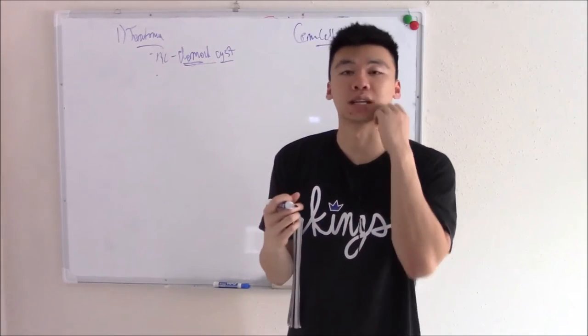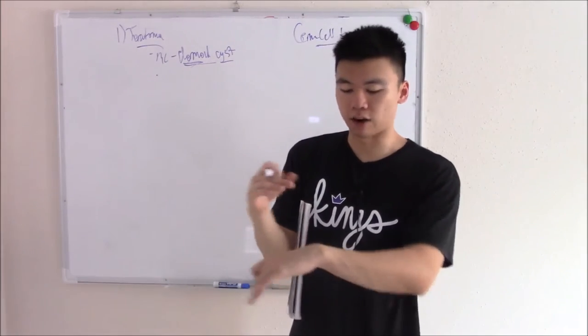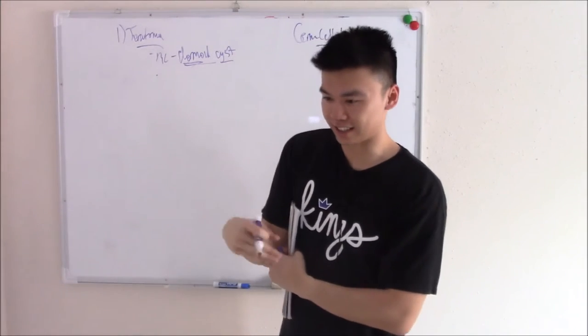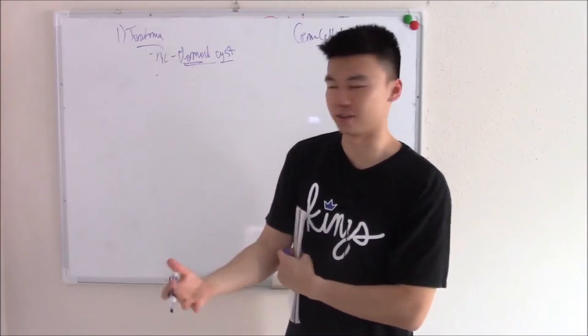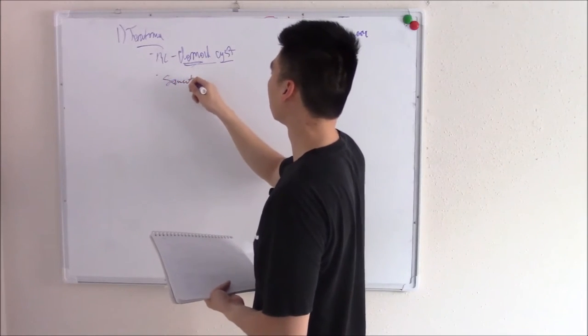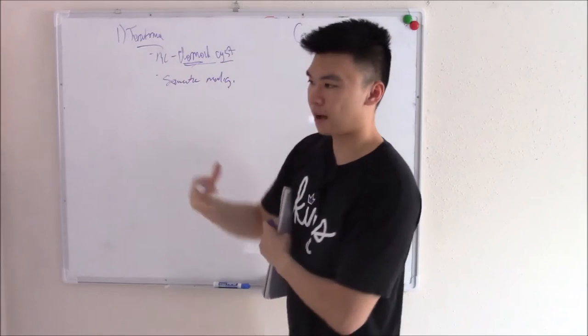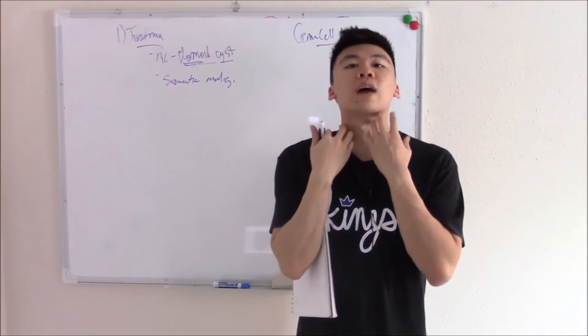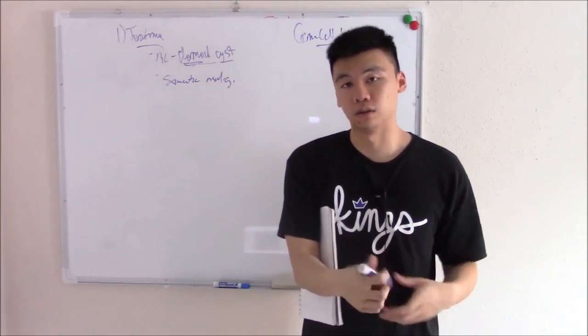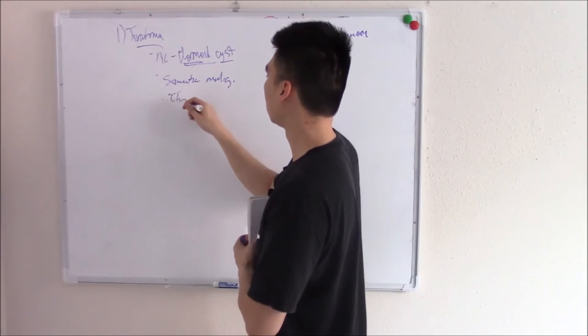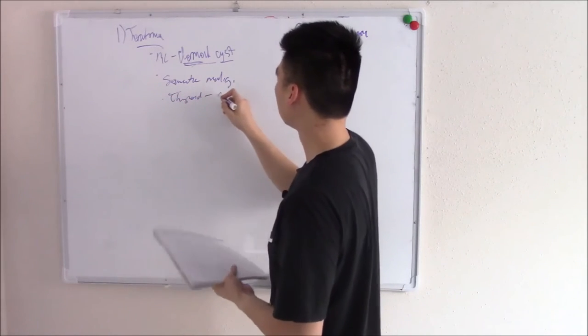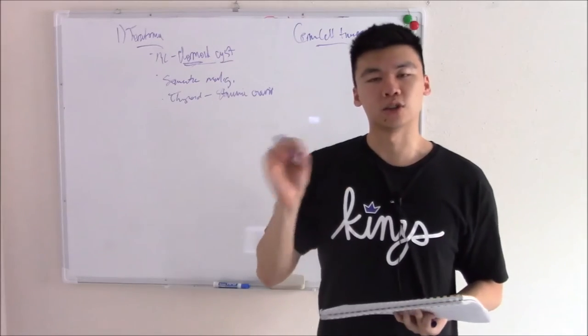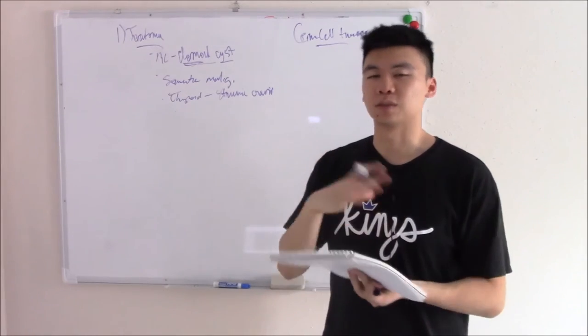It can grow any type of tissue. You can have teeth. There's been cases with skin cancer within the skin, within your teratoma. We call that somatic malignancy. You can have thyroid tissue. If a gal comes in with an ovarian mass and hyperthyroidism, but their thyroid is fine, it's because they have thyroid tissue in their ovary. We call that struma ovarii.